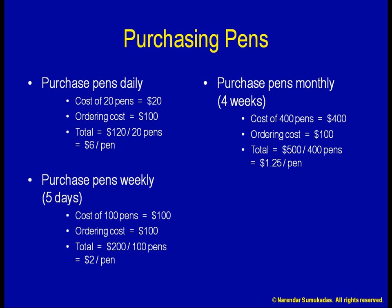Suddenly, my company institutes a new system. Instead of putting in a purchase order, I simply click on a web page and order two pens. Meanwhile, in the next department, you order three erasers. Someone else orders five paper clips, and so on. All these orders are electronically compiled and sent to our pre-qualified stationary supplier.